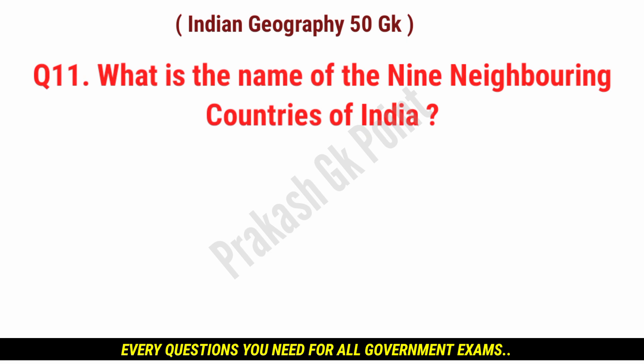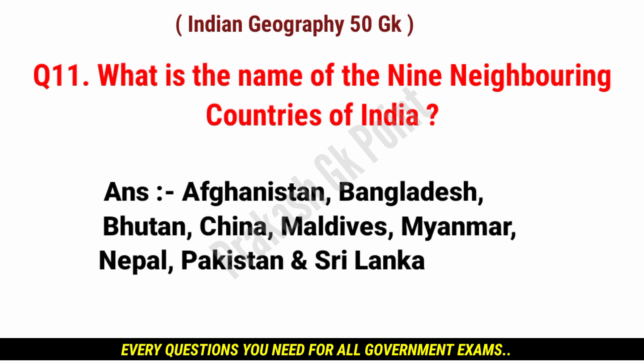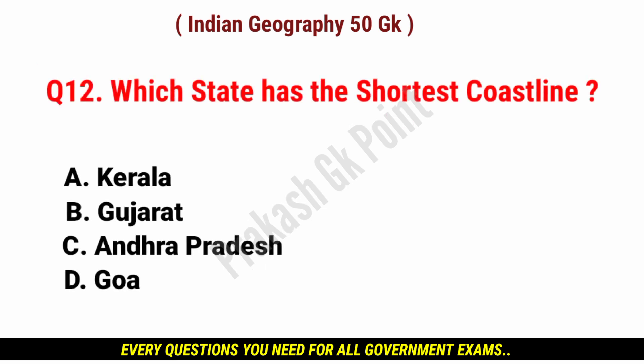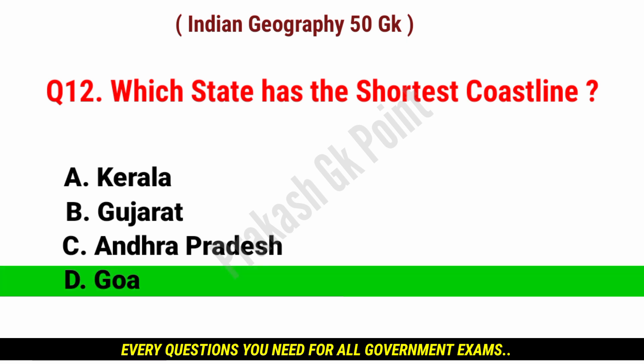What is the name of the 9 neighboring countries of India? Answer: Afghanistan, Bangladesh, Bhutan, China, Maldives, Myanmar, Nepal, Pakistan and Sri Lanka. Which state has the shortest coastline? Answer: option D, Goa.